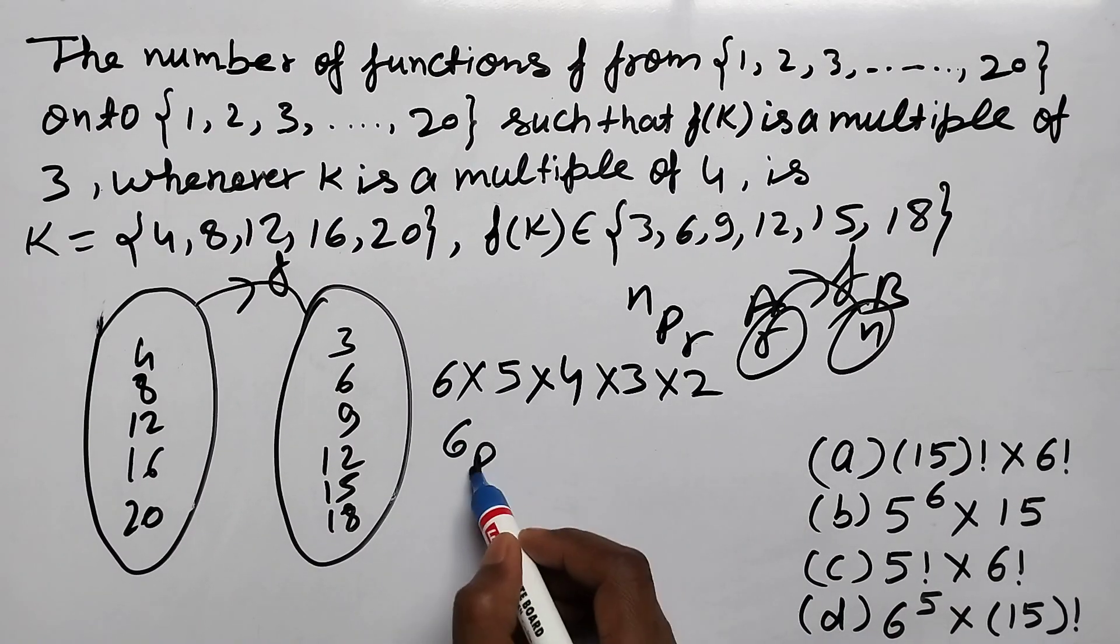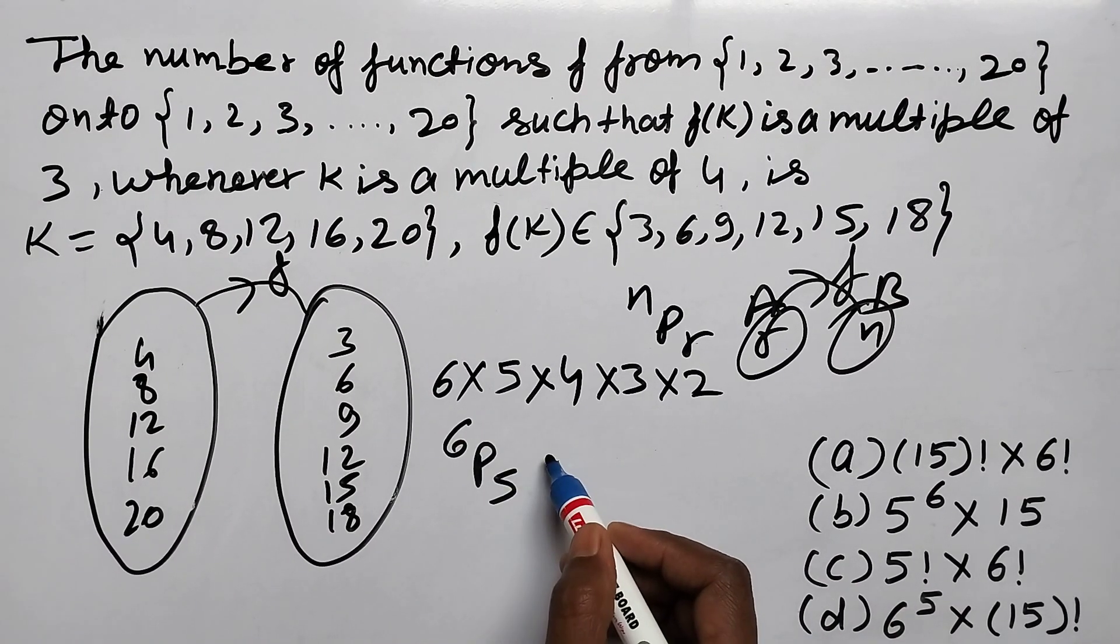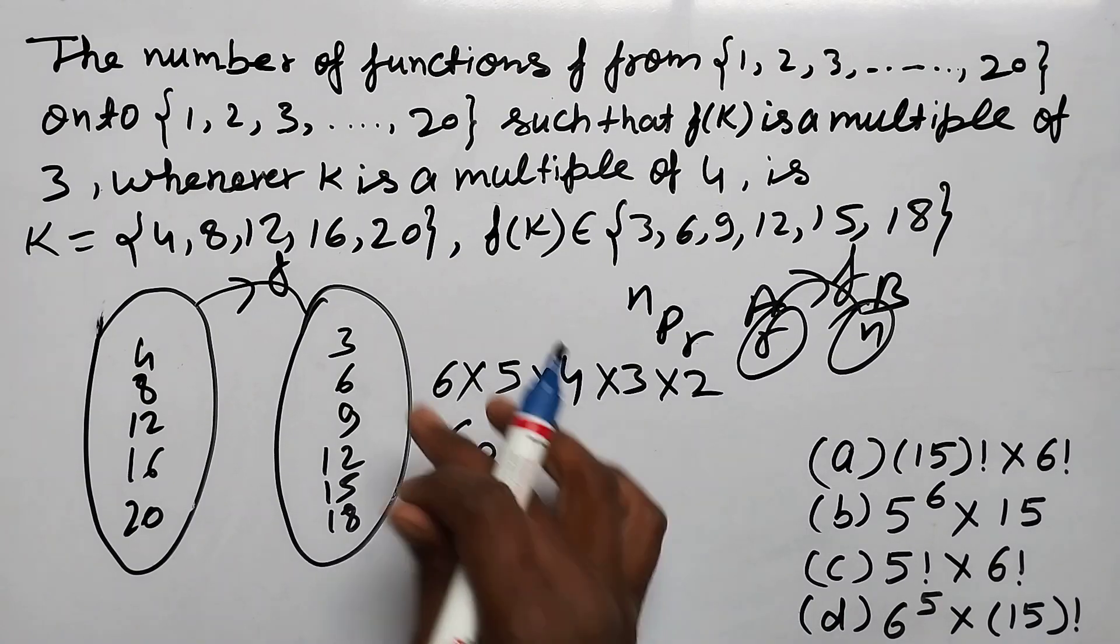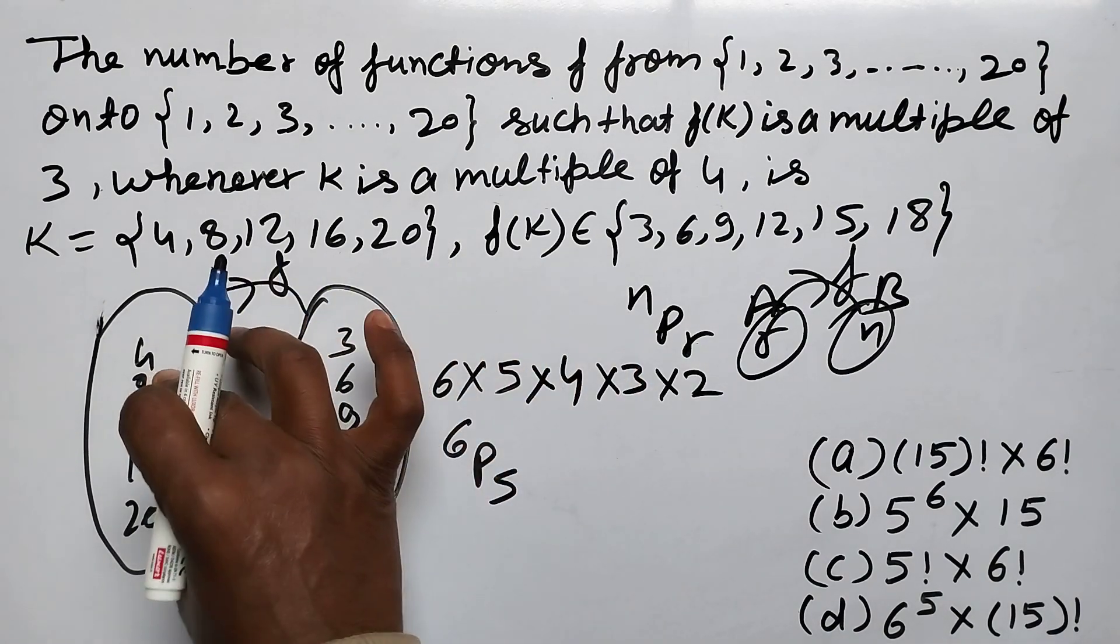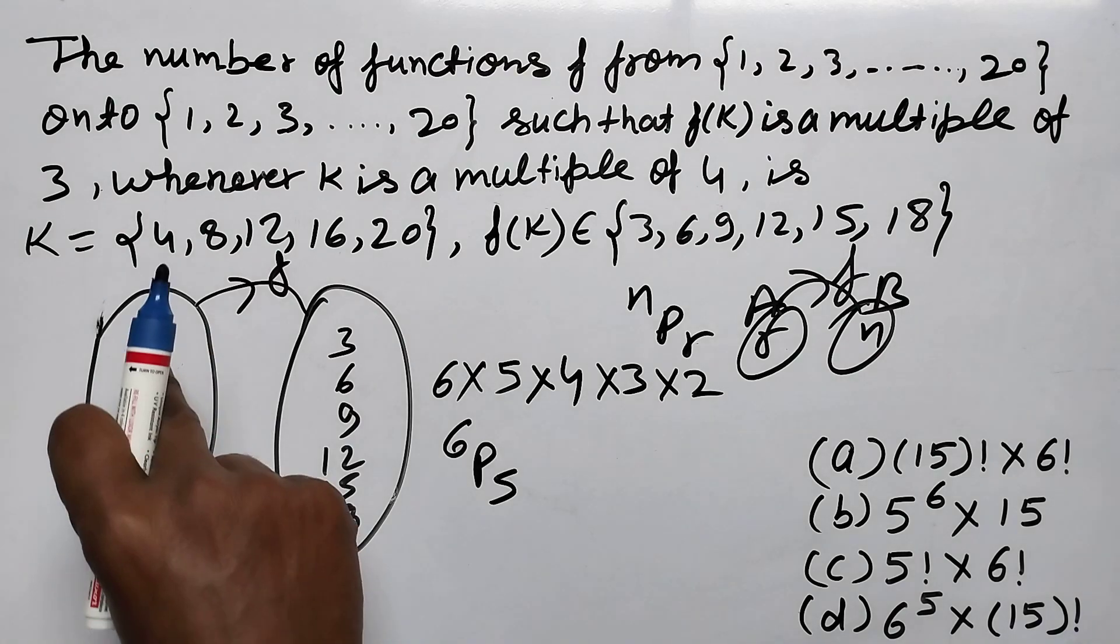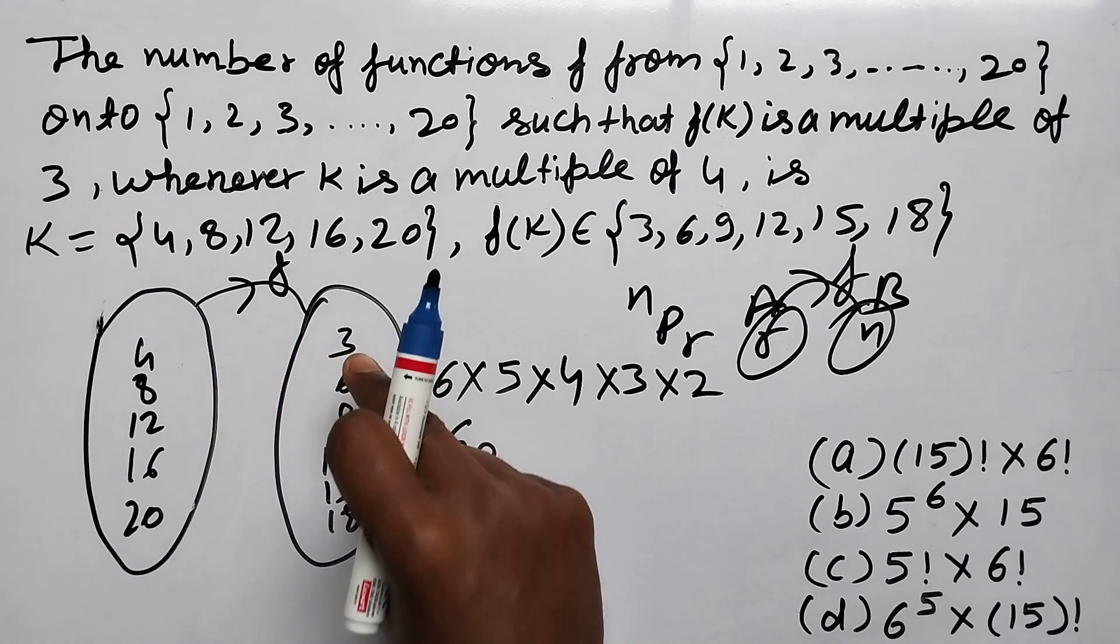This becomes 6P5. This becomes nPr, which is 6P5 and this is 5P5.